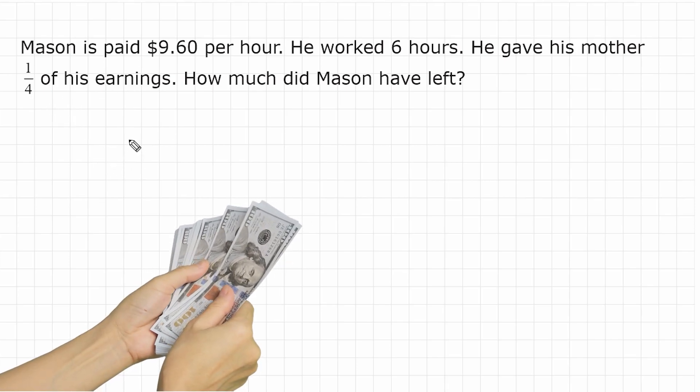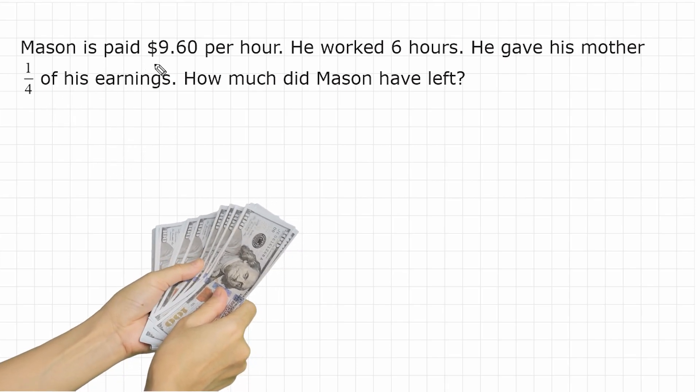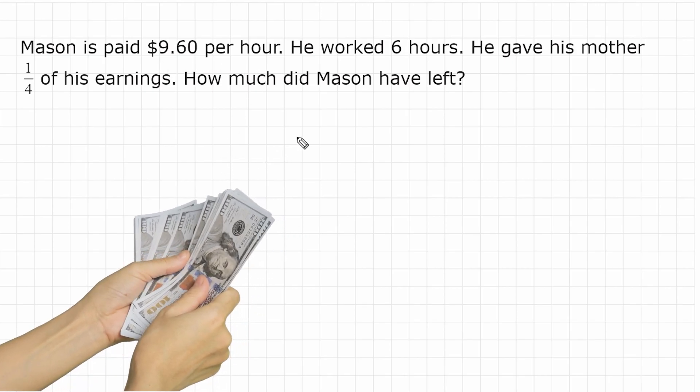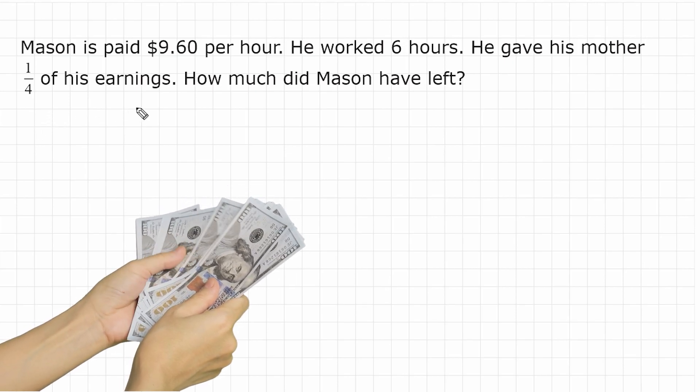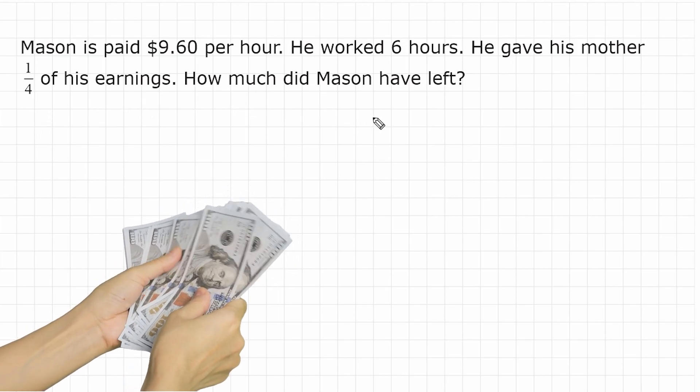So this problem reads that Mason is paid $9.60 per hour. He worked six hours. He gave his mother one-fourth of his earnings. How much did Mason have left?